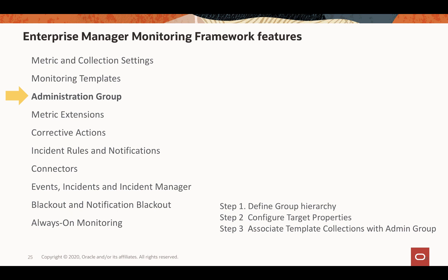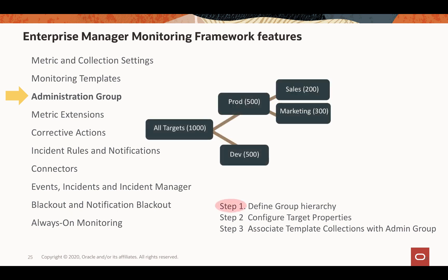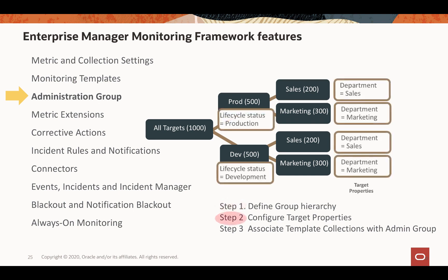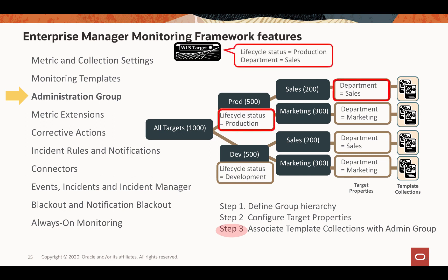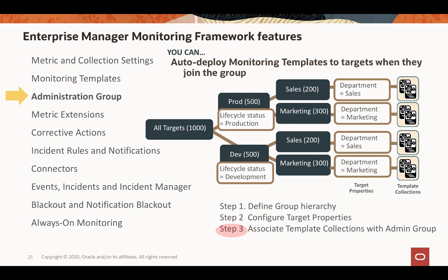With admin groups, first define the group hierarchy — technically defined by target properties such as lifecycle status equals production or department equals sales. Then associate a template collection, which is a package of monitoring templates. If a new WebLogic server target has target properties matching the group, it is automatically added to that group and receives the right monitoring template from the template collection. So using admin groups, you can auto-deploy monitoring settings to targets as they join the group.